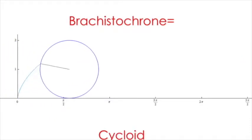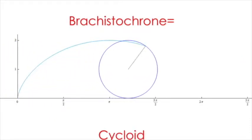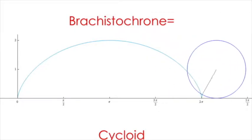Bernoulli also found out that this curve is also a cycloid, which is a point on the rim of a circle of radius rolling along a straight line.